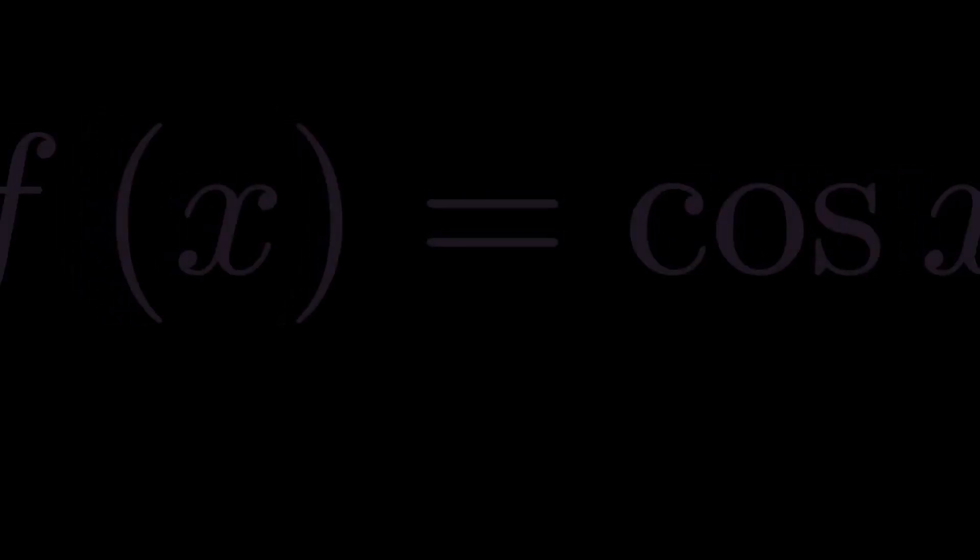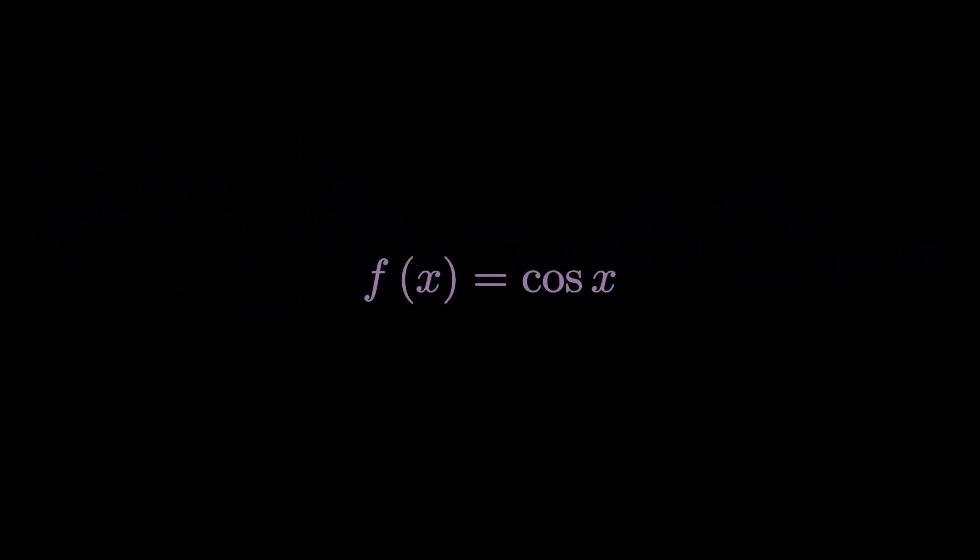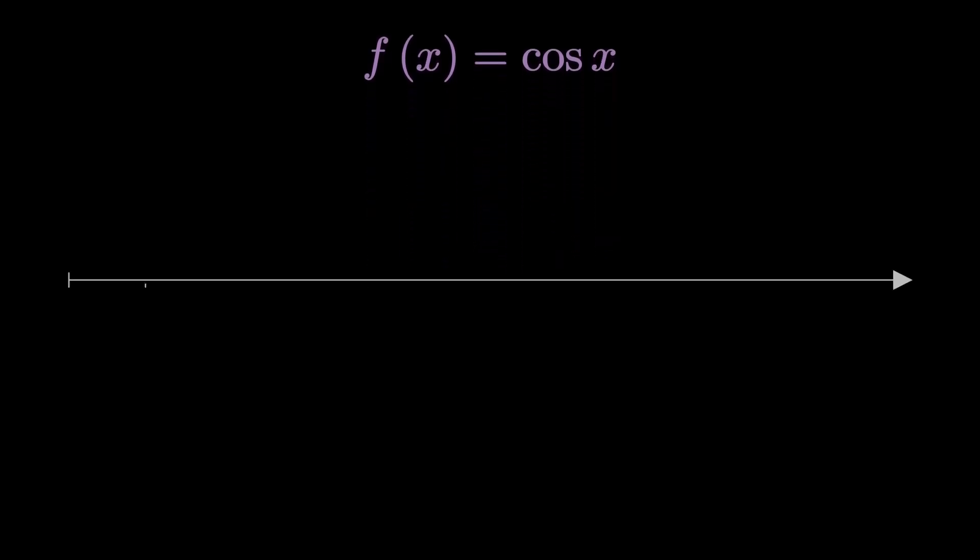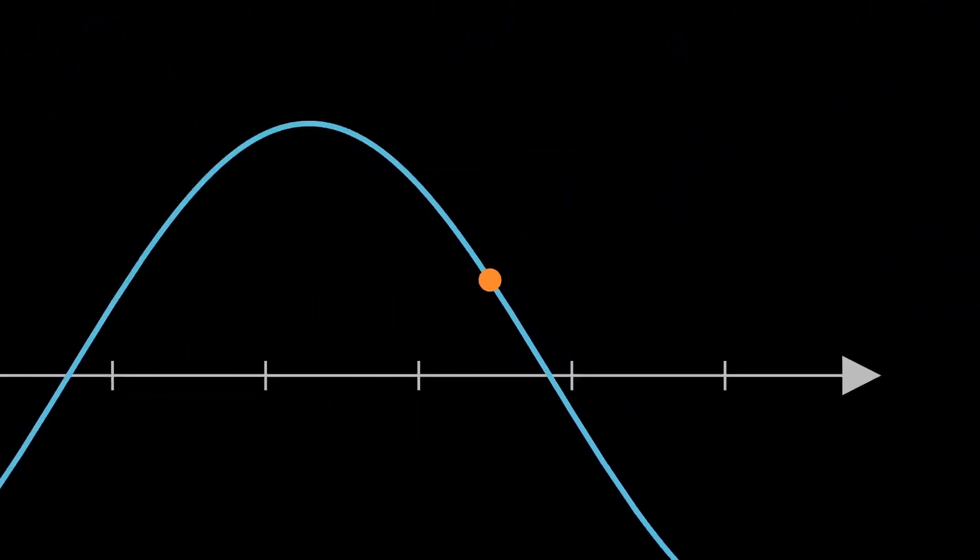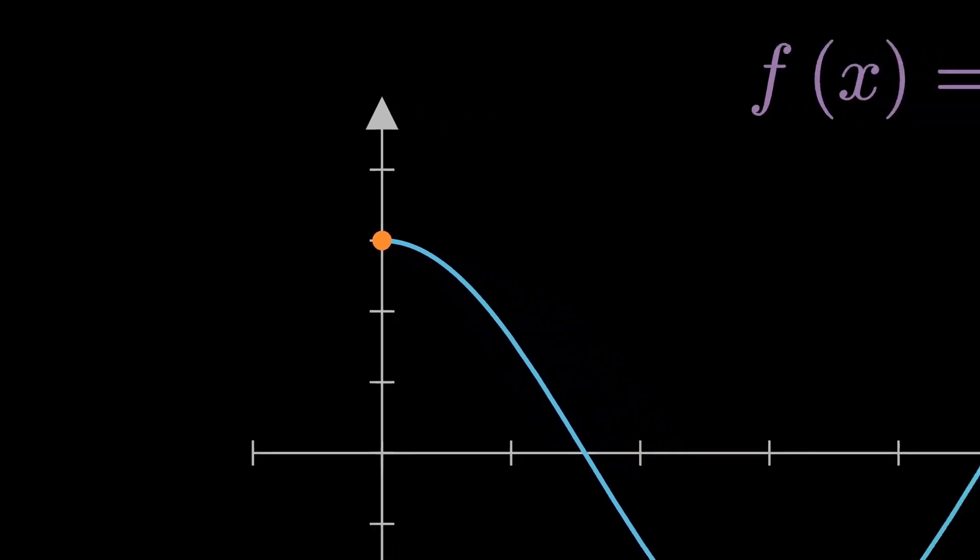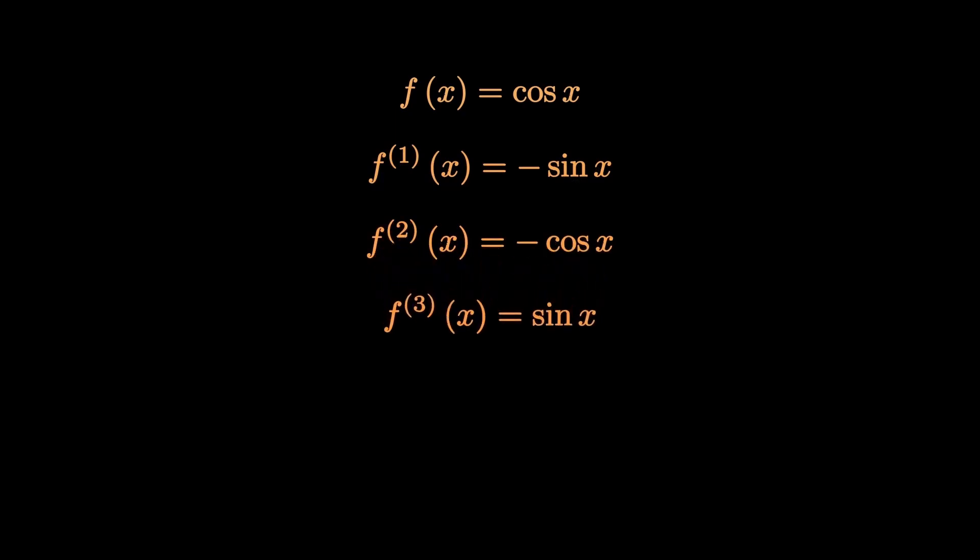And the next thing is to find the Maclaurin series for cos x. And I expect you to do it on your own, but I'll quickly run through it. Alright, so this is routine by now. Get the derivatives of f(x) = cos x. Let's do it five times just for the sake of understanding as before.